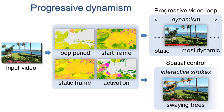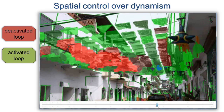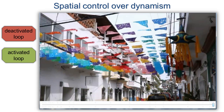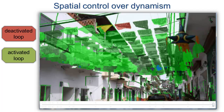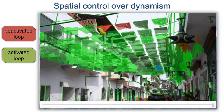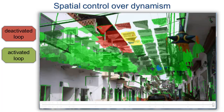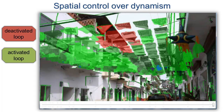The representation also allows spatial control over dynamism. Whereas the slider defines a single priority over looping pixels, we can override this by clicking a set of natural regions. These independently looping regions automatically preserve spatial consistency.